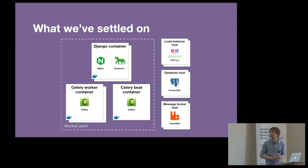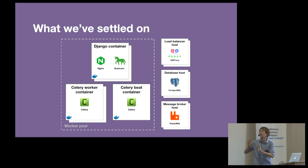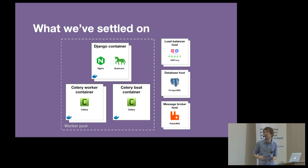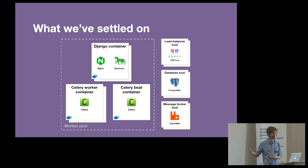This is roughly what we've settled on. You can think of it as the Python processes are in the containers, and stateful things are outside this worker pool and don't run in containers. We have basically three containers: the Django container, CeleryWorker, and CeleryBeat. We can scale the number of instances of the Django container and the number of CeleryWorker containers we run.